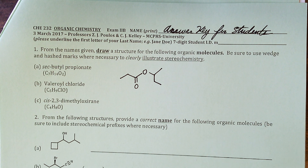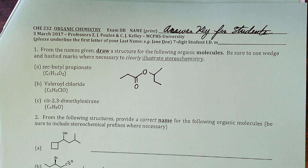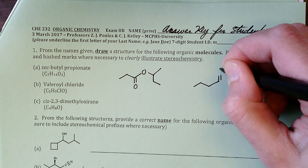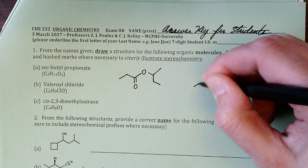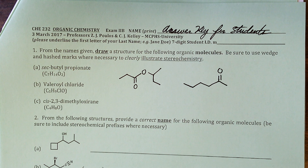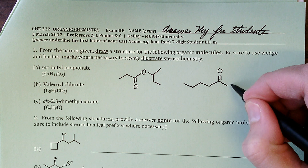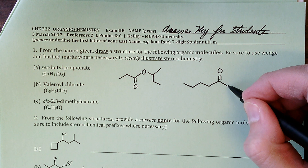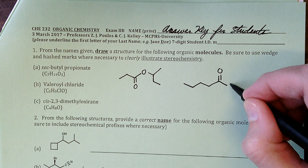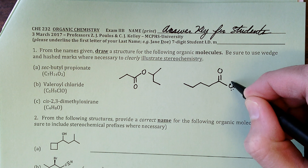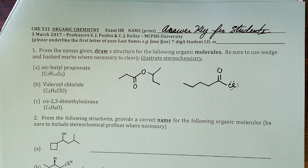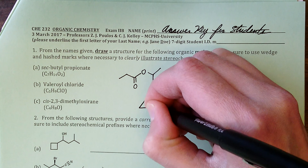1b: valeroyl chloride. This is the five-carbon carboxylic acid valeric acid, also known as pentanoic acid. We've changed the -oic acid ending to -oyl chloride to indicate this is the acid chloride derivative of valeric acid.